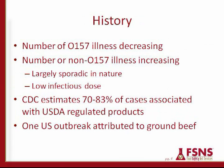The history leading up to testing being implemented is that the number of O157 illnesses are decreasing. However, the number of non-O157 STEC illnesses have been seen to be increasing, partly associated with the improved ability to test for them in clinical samples. These illnesses have been largely sporadic in nature, with no large outbreaks until this year with the O104 outbreak. These cells also have a low infectious dose like O157, and the CDC estimates that perhaps 70 to 85% of non-O157 STEC cases may be attributed to USDA related products.